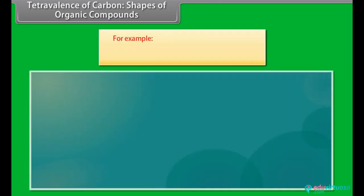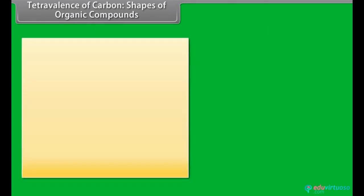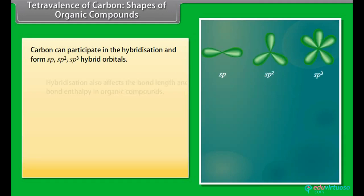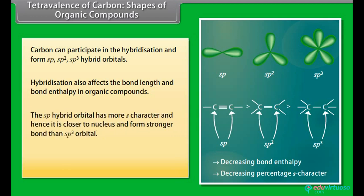A carbon atom can complete its octet only by sharing its valence electrons with other atoms. As a result, a carbon atom forms four covalent bonds by sharing valence electrons with other atoms. This is known as the tetravalency of carbon. For example, methane, ethane, ethene. Carbon can participate in hybridization and form sp, sp2, and sp3 hybrid orbitals. Hybridization also affects bond length and bond enthalpy in organic compounds.